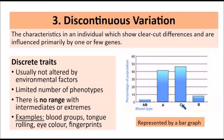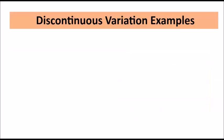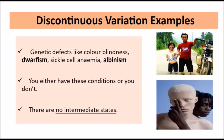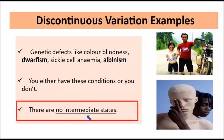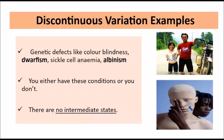Individuals will fit into one of these four categories. So the key thing to remember about discontinuous variation — you either belong to one category or another. Discrete traits, discrete categories, influenced by one or a few genes. Some other examples of discontinuous variation include genetic disorders and defects such as color blindness, dwarfism, sickle cell anemia, and albinism — all related to the genes inherited from the parents. With discontinuous variation especially related to genetic defects, you either have the condition or you don't — there's no intermediate state. You're either an albino or you have normal skin pigmentation — there's no in-between.